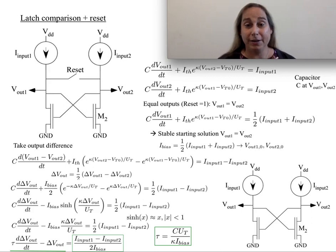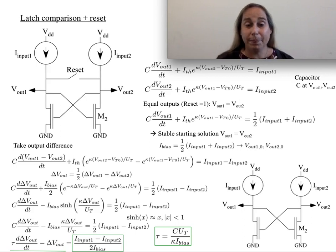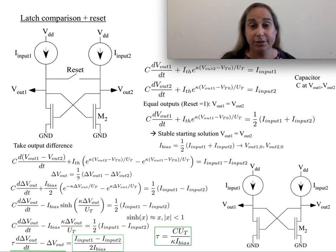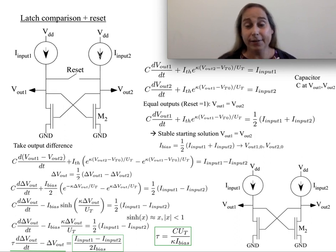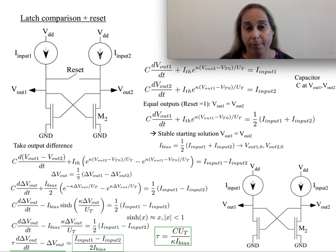I want to talk about the mathematics around a latch structure, and walk through what is a classic structure. I imagine two input currents being defined, coming from somewhere — likely from two other MOSFETs that have two other voltages being compared. But let's start from the currents.